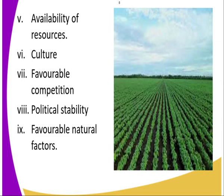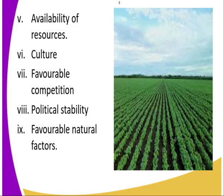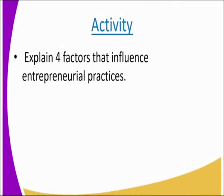Number seven, it is favourable competition — is there favourable competition in the market? Number eight, we have political stability. How stable is the politics of that country? If there is instability, how do the people in that place behave? Number nine, favourable natural factors — like availability of water, availability of rivers, and the climate. How is the climate? Is it going to be favourable? You look at all those things before you start the business, as that is what is going to limit you.